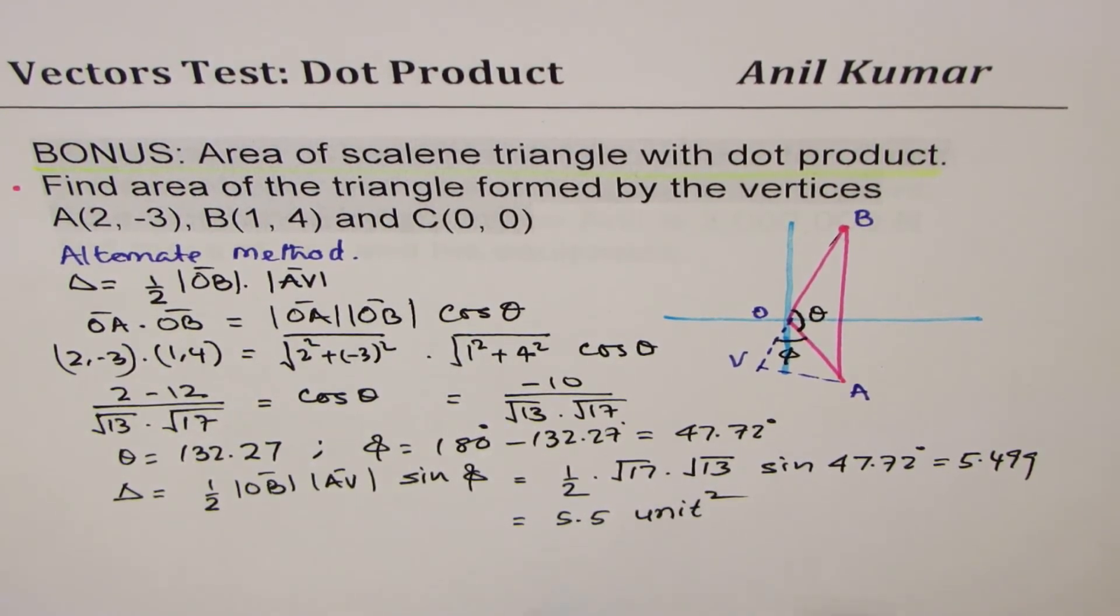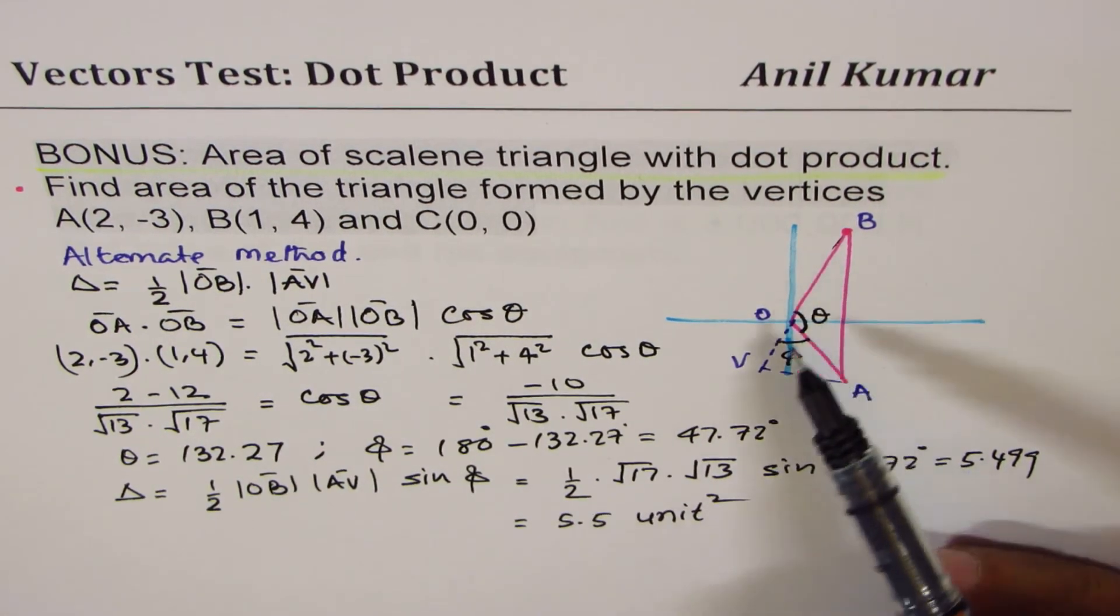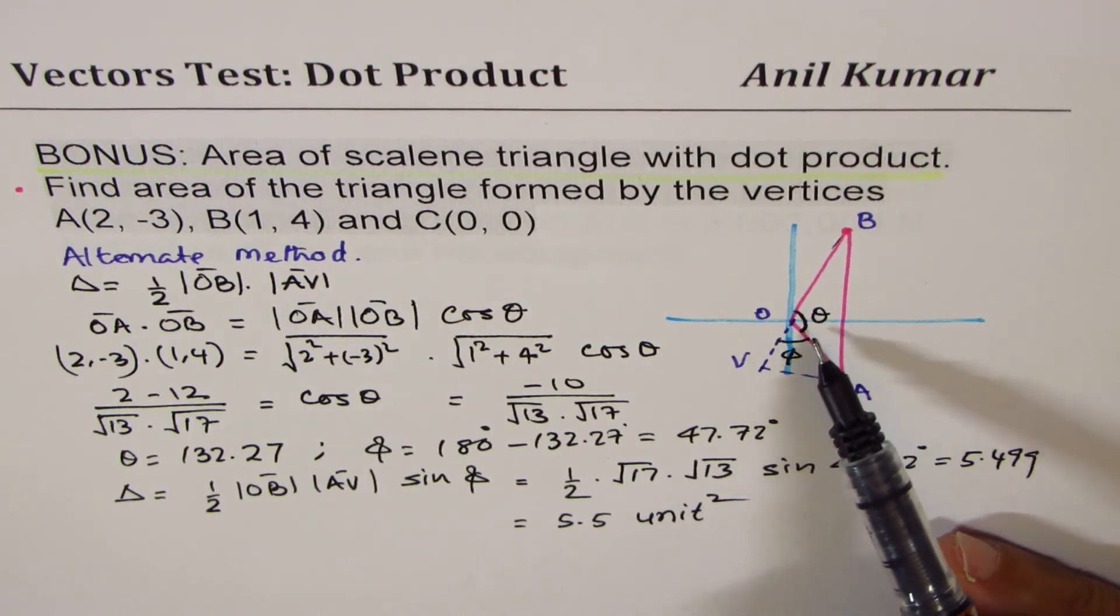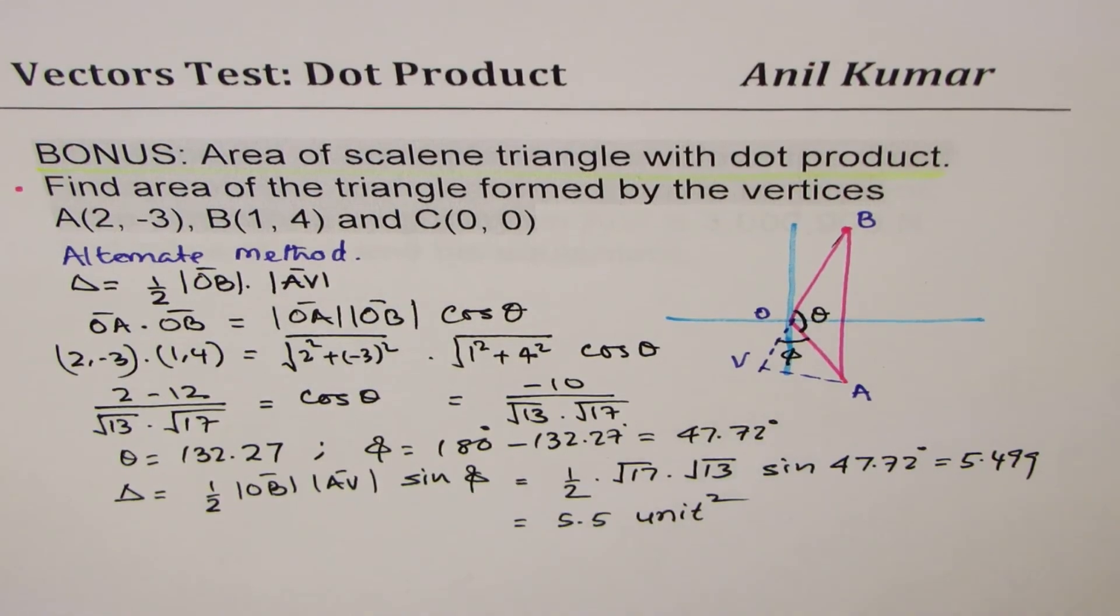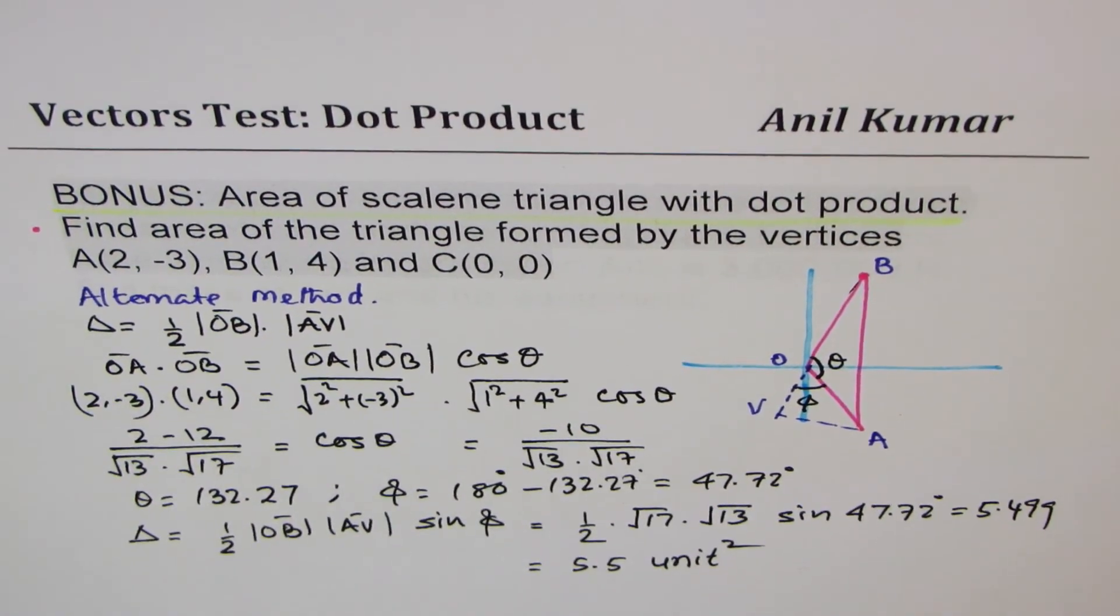So we can find area using this alternate method. Using dot product, find the angle between the vectors, and the exterior angle will be 180° minus that angle. Use sine of θ to get your answer. Hope you find this strategy, the alternate method, also useful.